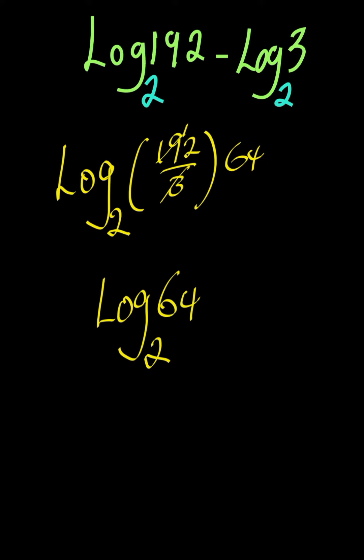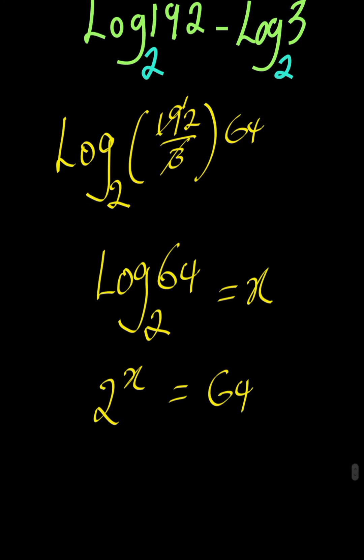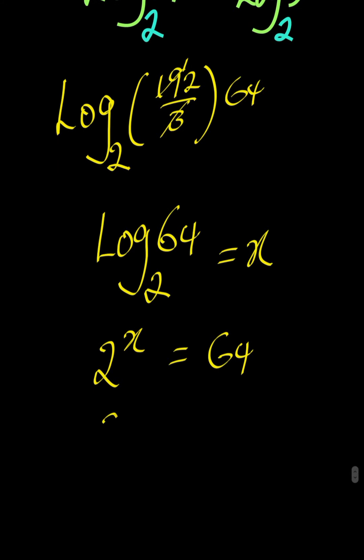And you know that you can assume that this is equal to x. That implies that 2 to the power of x is equal to 64. And of course 64 can be written as 2 to the power of 6 because 2 multiplied by itself 6 places will give us 64.